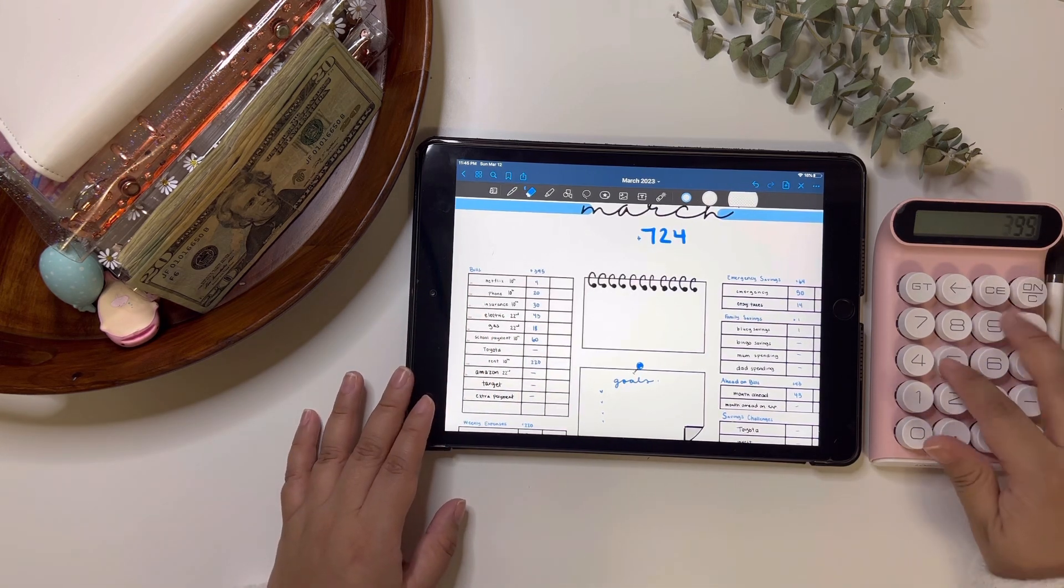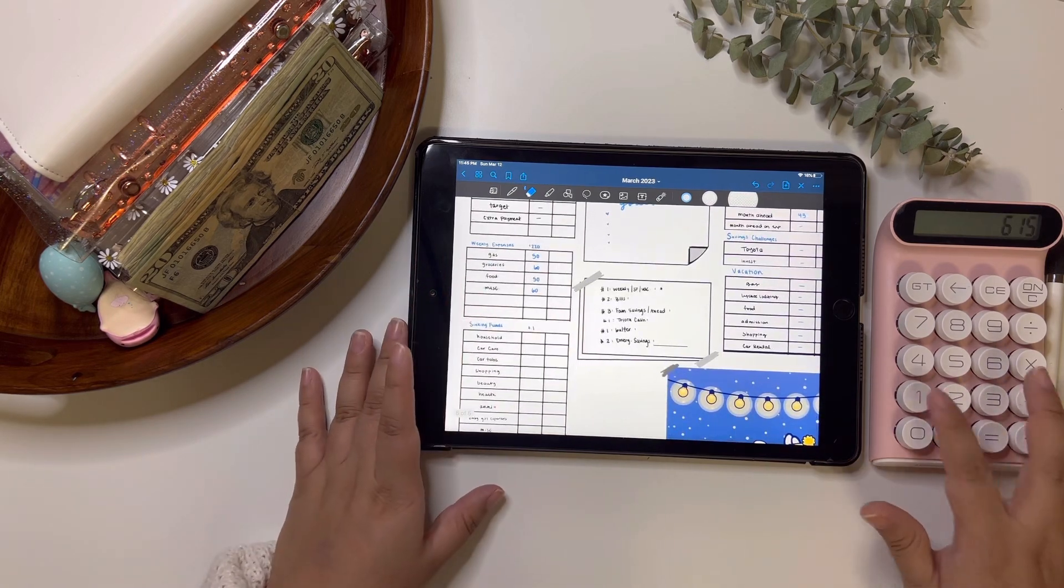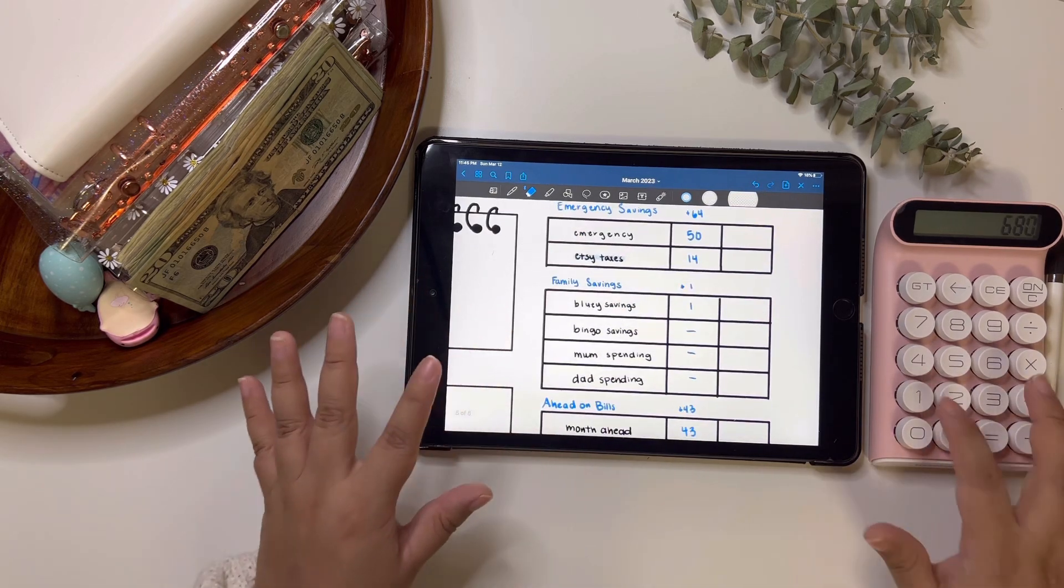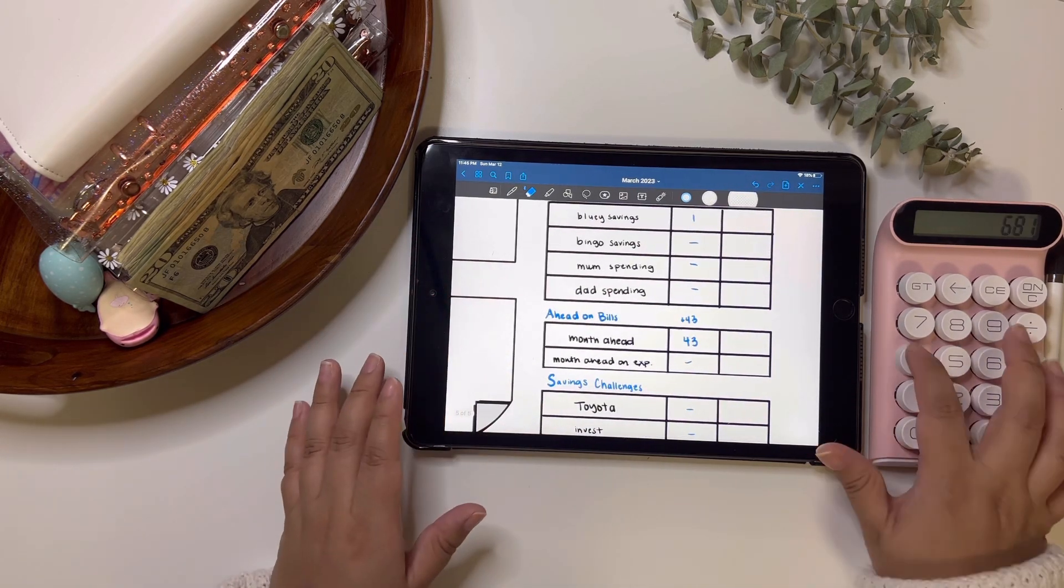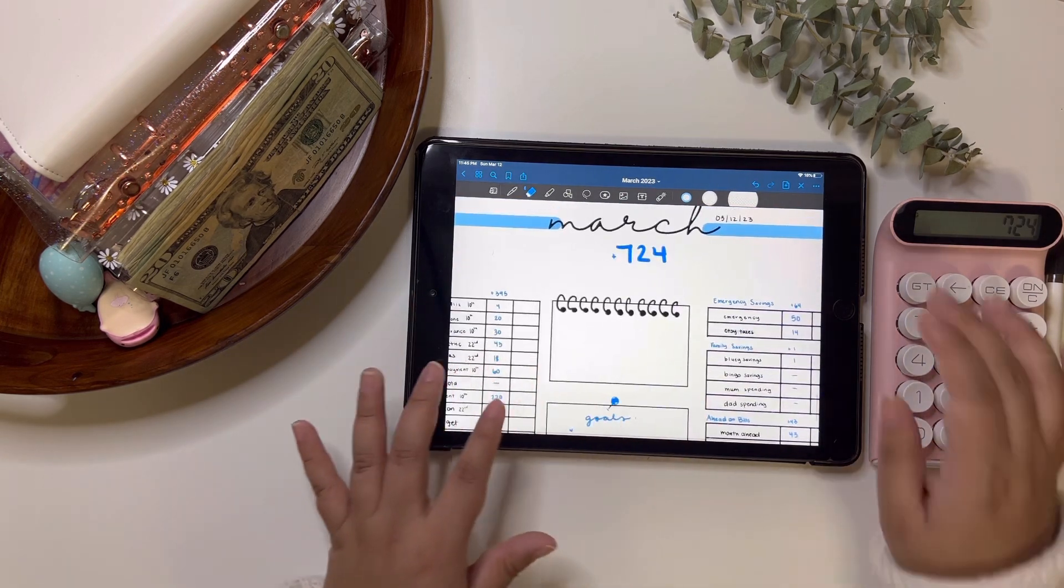So I'm going to go ahead and add everything up and it should equal up to $724. So we have $395 in bills, $220 in weekly expenses, $16 into sinking funds, $64 into emergency savings, $1 into family savings, and $43 into ahead on bills. Perfect, $724.